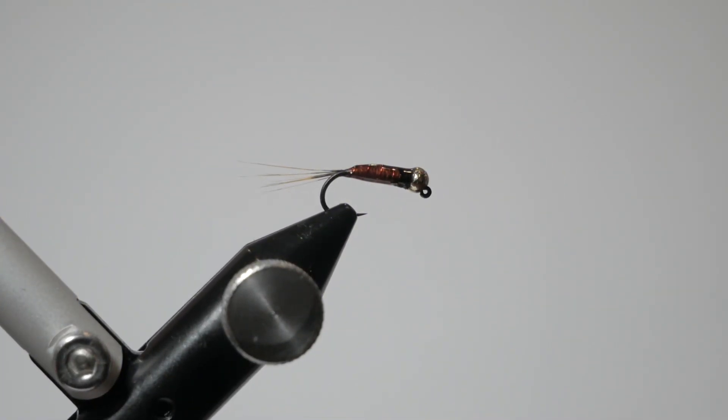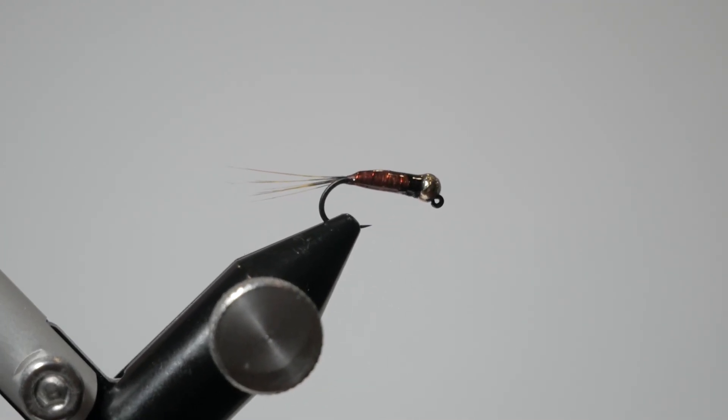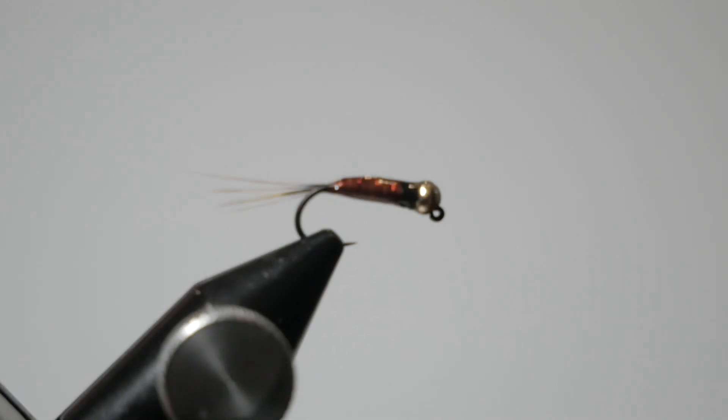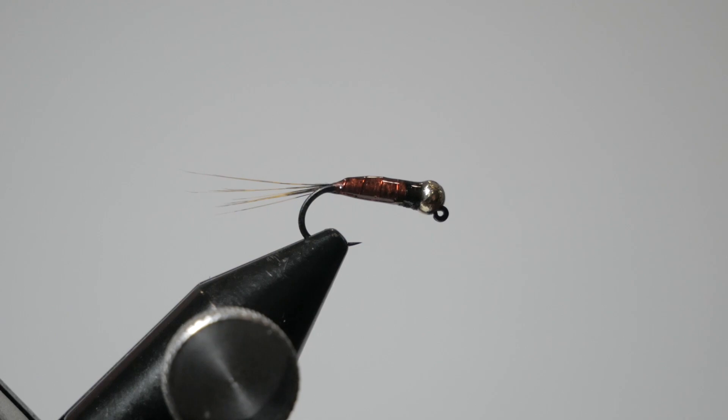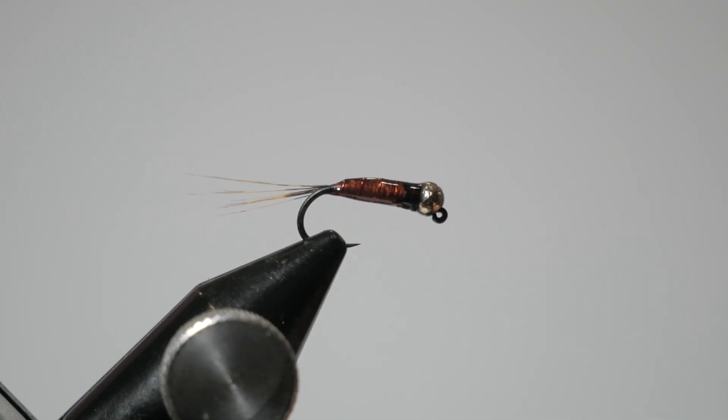There we go. So that right there is the completed bug - absolutely gorgeous pattern, totally fun to tie. I think it does particularly well in just about any body of water but it's kind of got that root beer look to it. You can tie it in a ton of sizes - this one's a 14 - but it's a durable fly, a very nice jigging fly, and I think you'll have a lot of success with it. Give it a try.